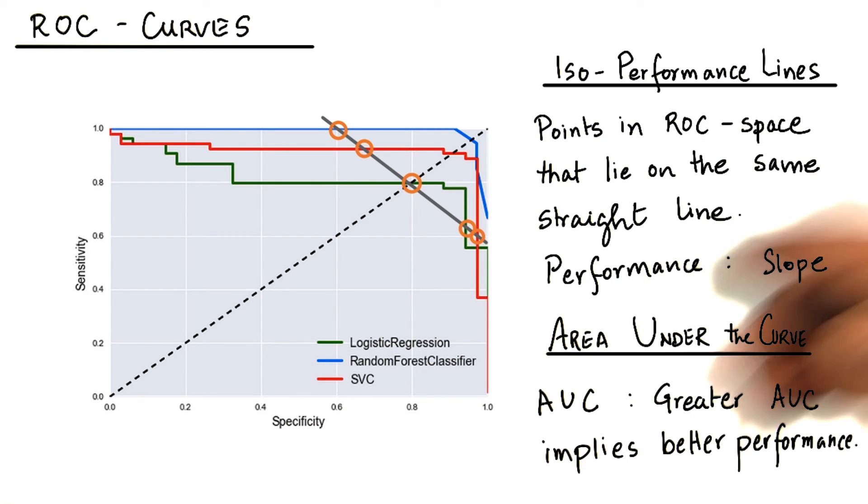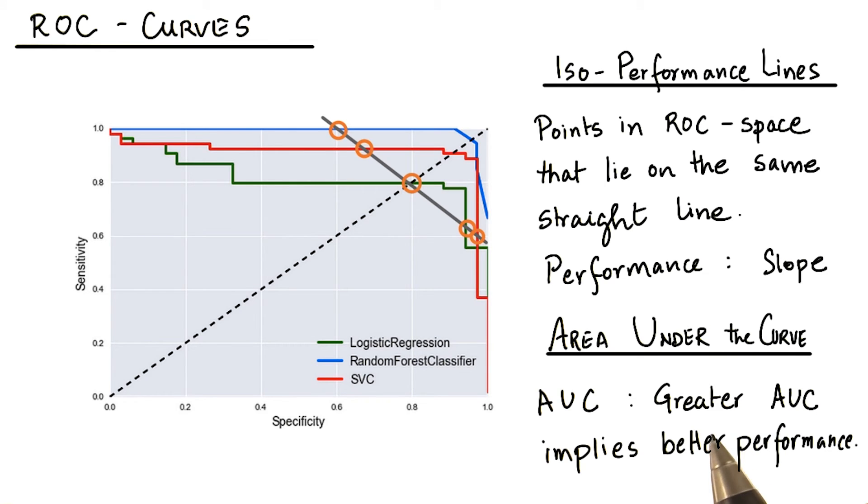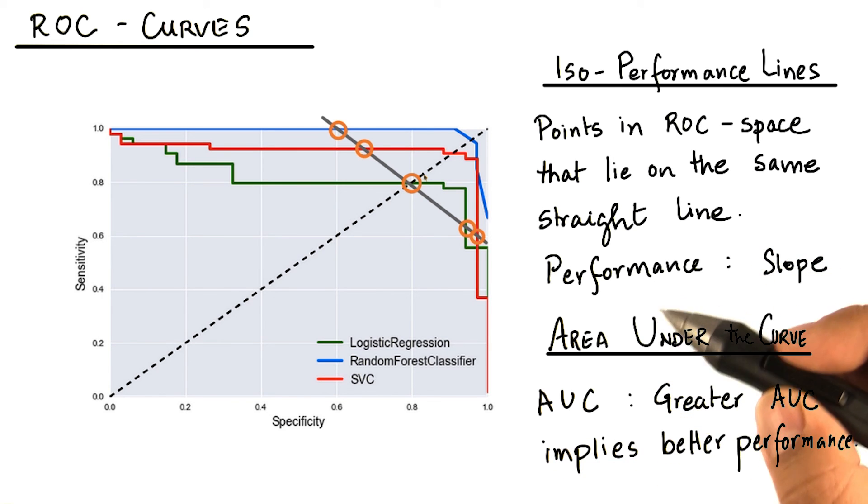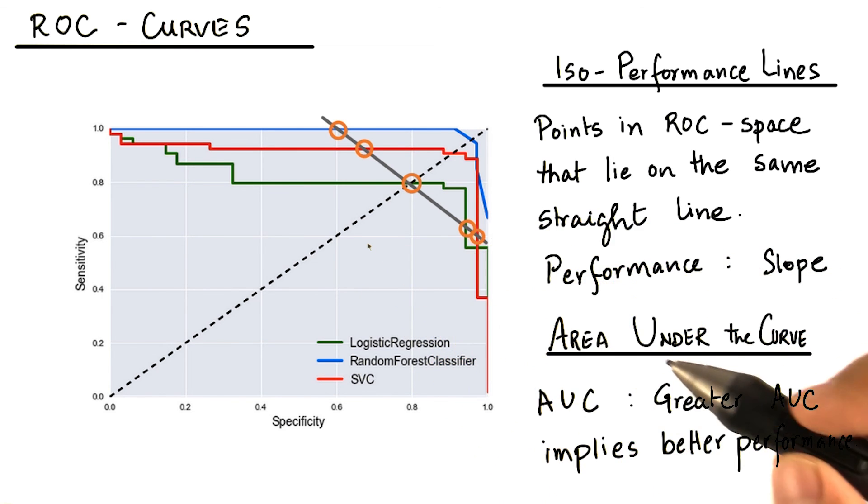One very interesting property of the ROC curve is that it is invariant under the class distribution. And thus, the results are applicable to a dataset with different proportions of class instances. What this means is that it doesn't matter as far as the ROC analysis goes as to which class has how many points to train upon.